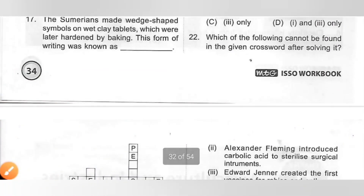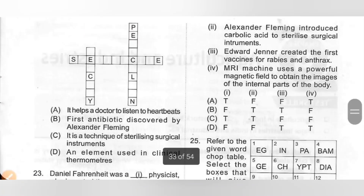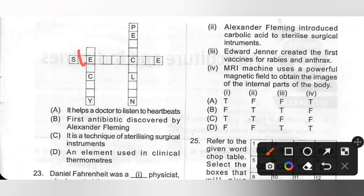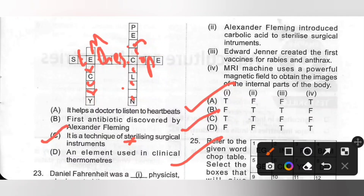Question 22: Which of the following cannot be found in the given crossword after solving it? A. Stethoscope — it helps a doctor listen to heartbeats, found in the word grid. B. Penicillin — first antibiotic discovered by Alexander Fleming, also hidden in the word grid. C. Steaming — a technique for sterilizing surgical instruments — steaming is not hidden in the given crossword. D. Mercury — an element used in clinical thermometer, also hidden in the word grid. Option C is the correct answer.